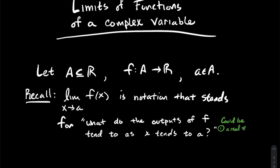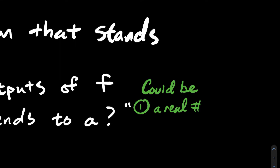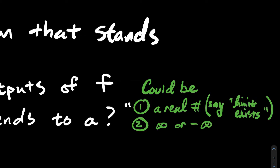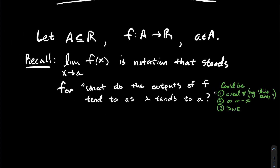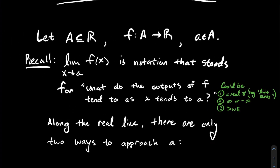There are three possibilities that could happen. The first thing is you could get a real number — that's what the outputs might tend to — and in that case is when we'd say that the limit actually exists. The second thing is that the outputs tend to infinity or to negative infinity. And the third thing is we'd say the outputs don't tend to anything, so the limit does not exist. So those are the only three possibilities for a limit of a real valued function.